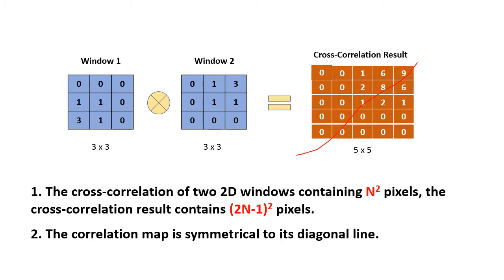Coming back to the PIV problem: by comparing window 1 and window 2 we know the particle displaces two pixels. Similarly to the 1D case, we identify the center of the cross-correlation map, identify the peak intensity, and compare their positions. The displacement observed from windows 1 and 2 is confirmed from the cross-correlation map, giving a vector of (2, 2) — that's 2 pixels in x and 2 pixels in y.